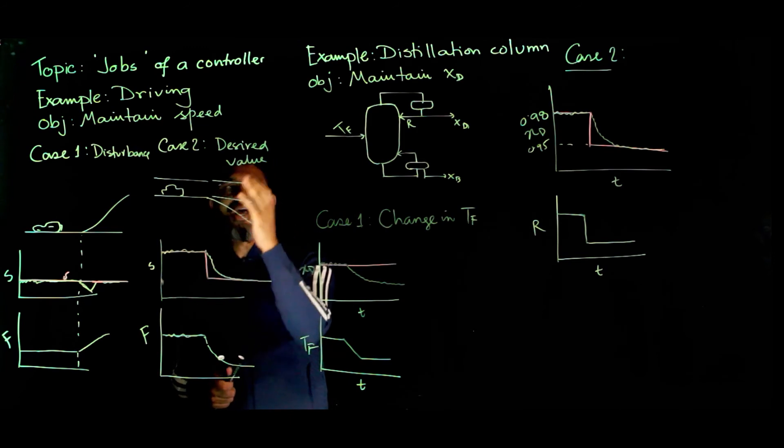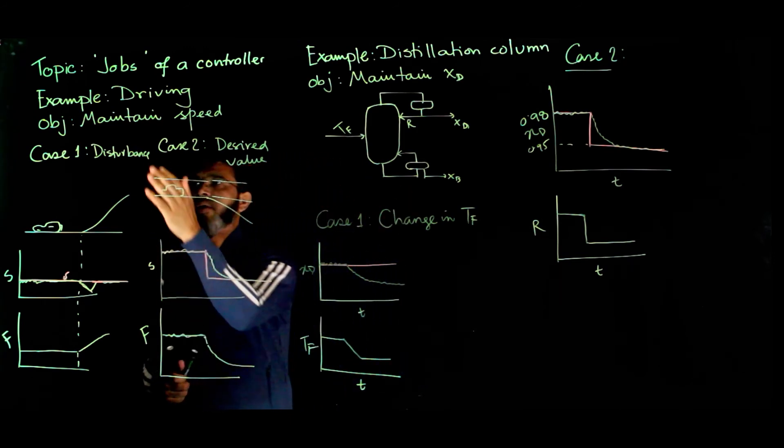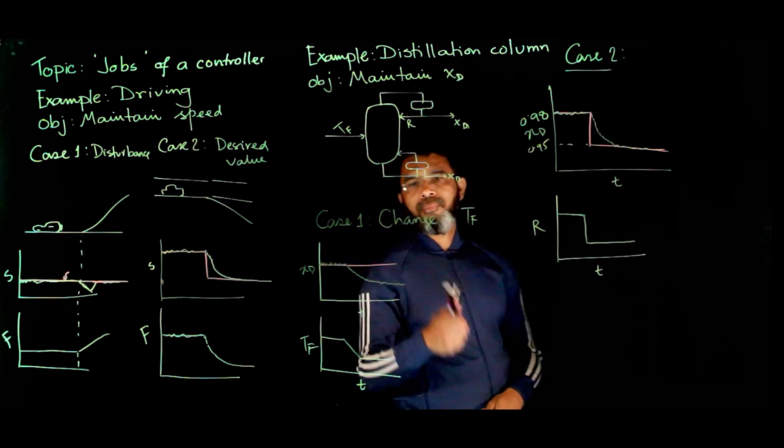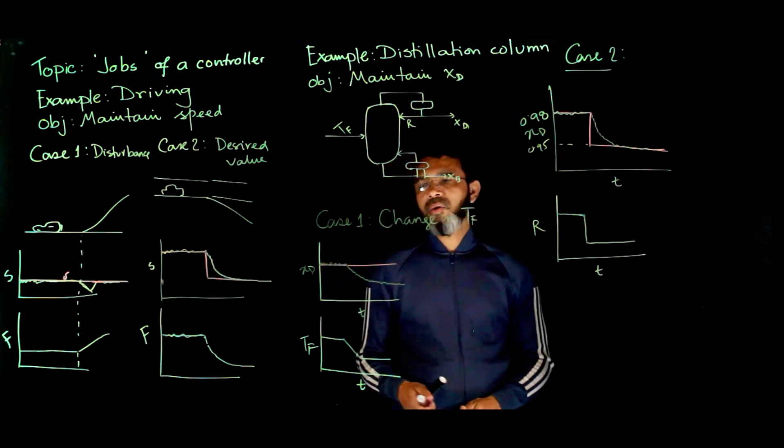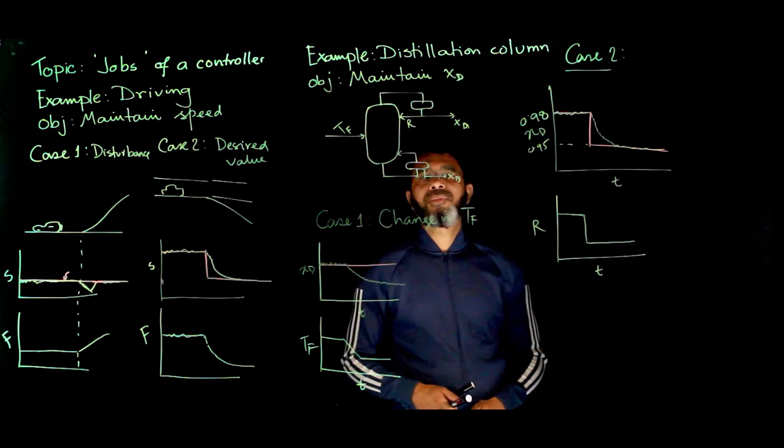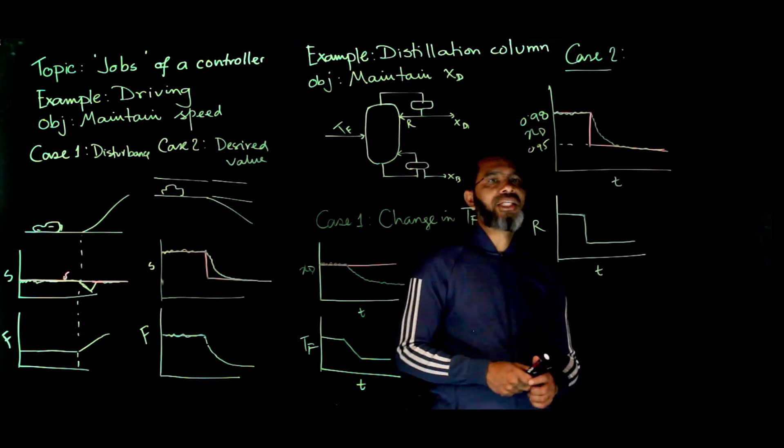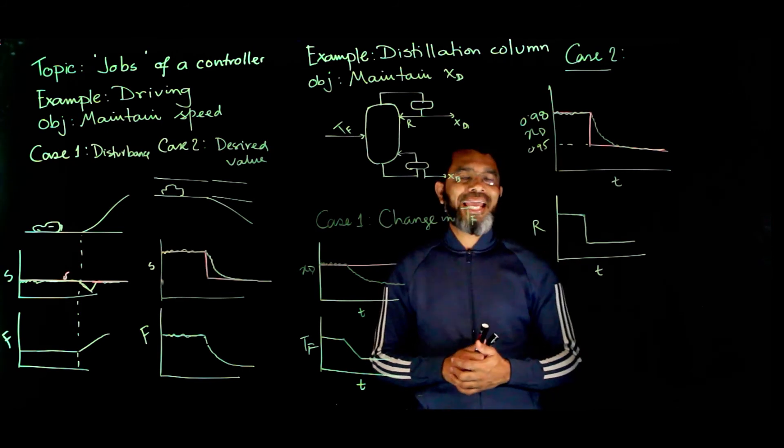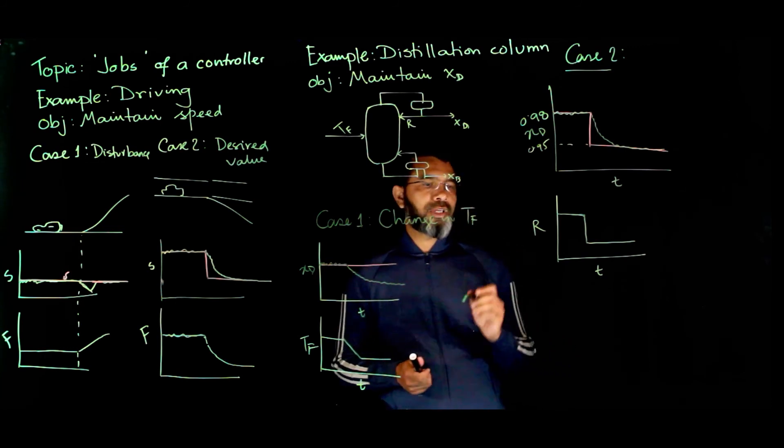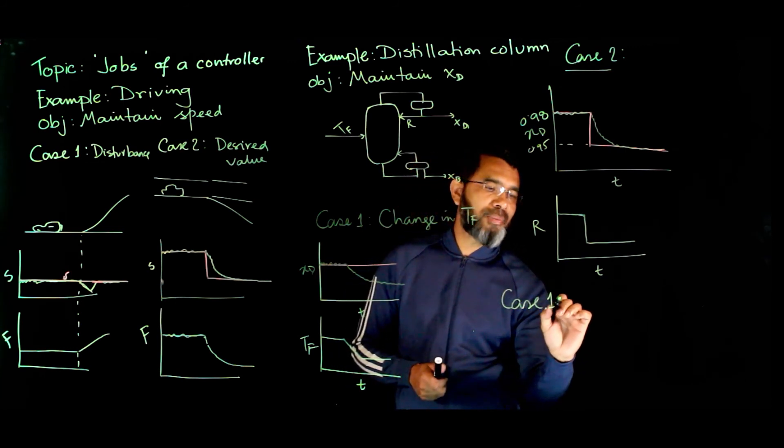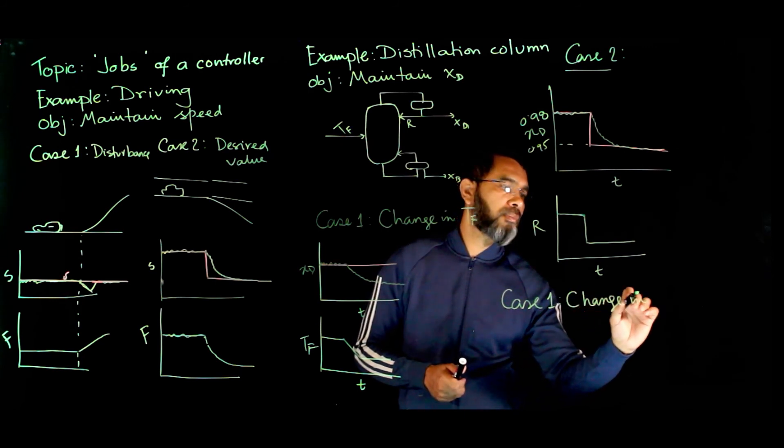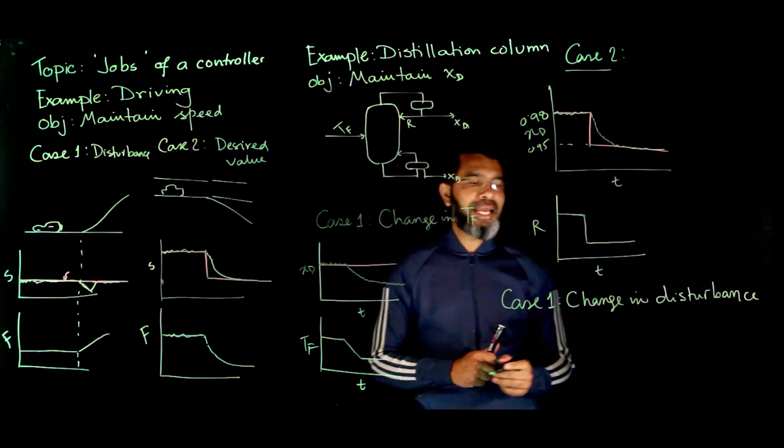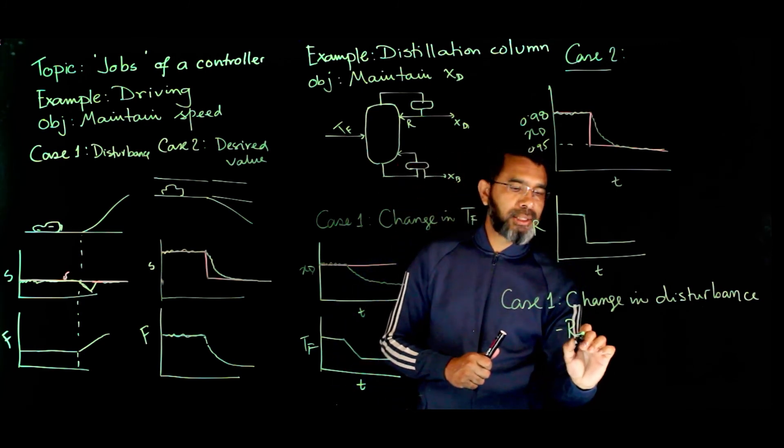You see these two cases for driving and for distillation column. There may be different scenarios. For Case 1, the disturbance is changing and Case 2, the set point is changing. For the distillation column system as well you will have these two scenarios that the disturbance - here the feed temperature is one of the disturbances - this disturbance may change or the set point may change. These are the two main scenarios that the controller faces, and the job of the controller will be to maintain the XD at the desired values. For the first case when we see there is a change in disturbance, the controller will have to maintain the XD at its desired value and that control is called regulatory control.